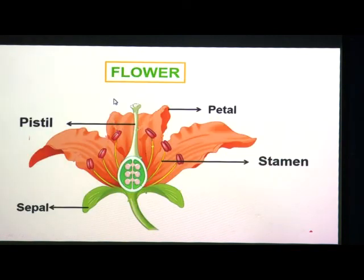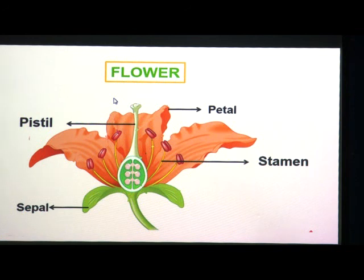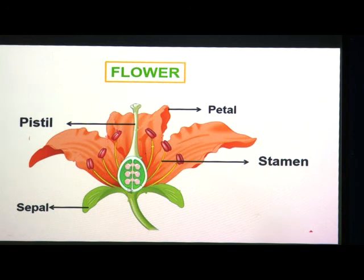Flowers are the most beautiful part of a plant. Different plants have different flowers of many sizes, shapes, colours, and fragrances. Common flowers include hibiscus, rose, jasmine, sunflower, marigold, and lily. Flowers contain the reproductive organs of the plant. The flower is attached to the stem by a stalk called the pedicel. The upper swollen part of the pedicel is known as the thalamus, and other parts of the flower are arranged in rings or whorls on the thalamus.